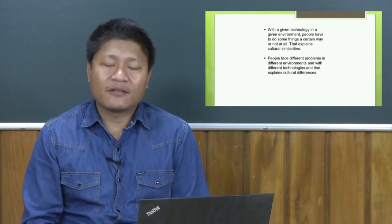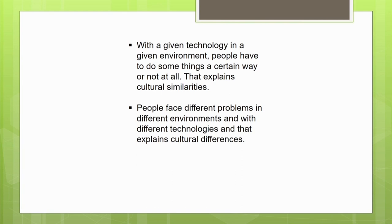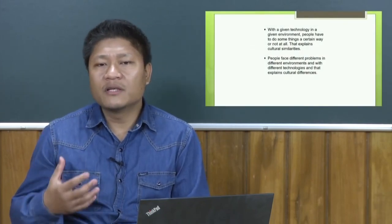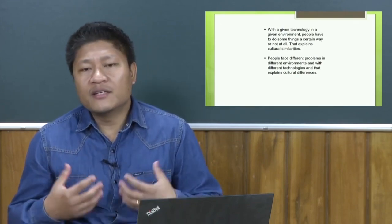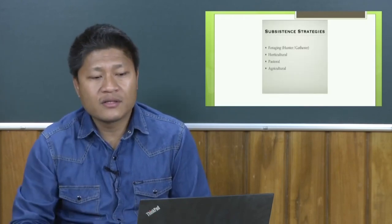With a given technology, in a given environment, for example, people have to do some things a certain way or not at all - that explains the cultural similarities. And people usually face different problems in different environments and with different technologies, and that explains the cultural differences. Cultural adaptation is also - technology is also used as a part of cultural adaptation. The region being different, environment might require using of different technology. Through that, it leads to differences in culture across societies.